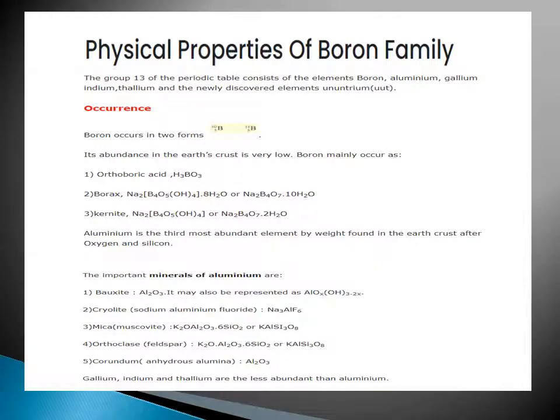Physical properties of boron family. The group 13 of the periodic table consists of the elements boron, aluminium, gallium, indium, thallium, and ununtrium (UUT).